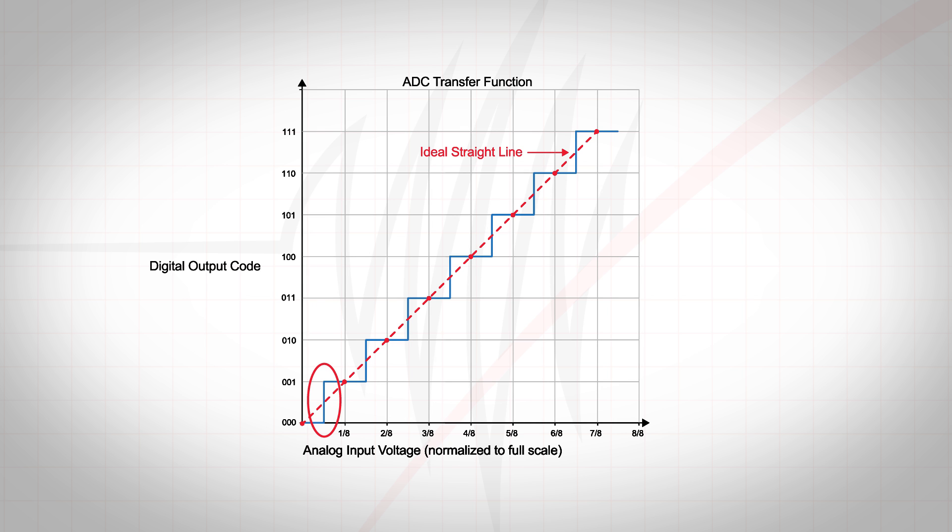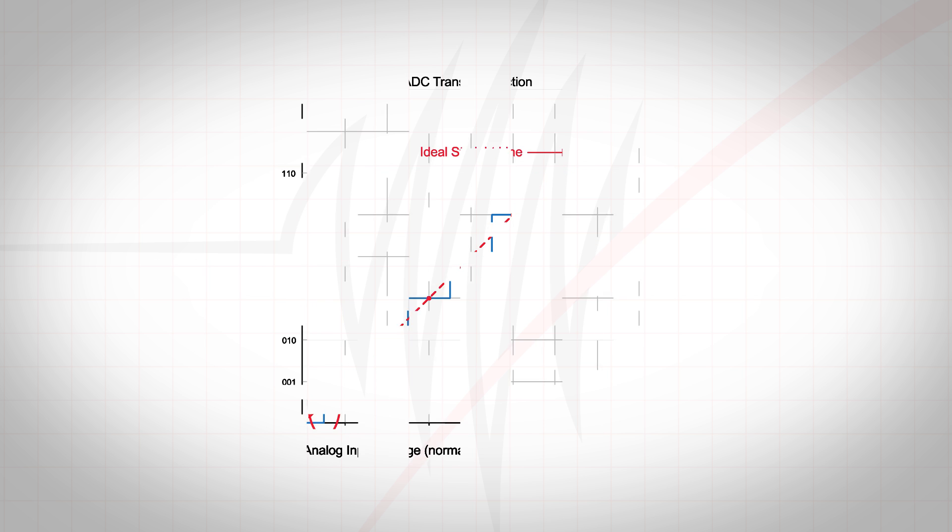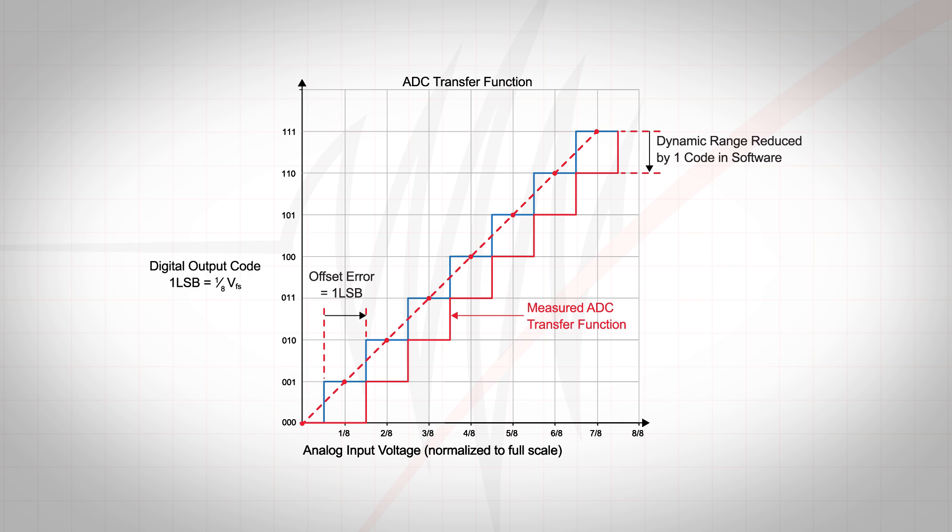In the ideal ADC transfer function, the first transition occurs at a voltage equal to one-half LSB. Offset error is the difference between the first ideal transition voltage and the measured transition voltage of an ADC.